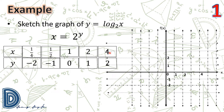Now let us plot the points on a rectangular coordinate system. We have (1/4, −2), (1/2, −1), (1, 0), (2, 1), and (4, 2). Lastly, connect these points using a smooth curve. This is the graph of y = log₂(x).